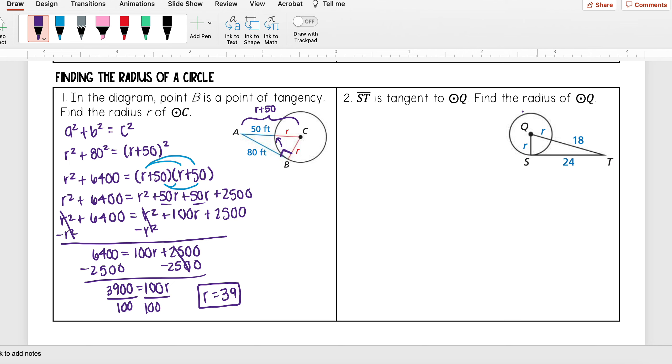Okay, let's try one just like that. Here it says ST is tangent to circle Q, find the radius of circle Q. This is really just saying the same thing. I know that ST is tangent to the circle, so that means it is perpendicular to my radius, so I have a right angle here.